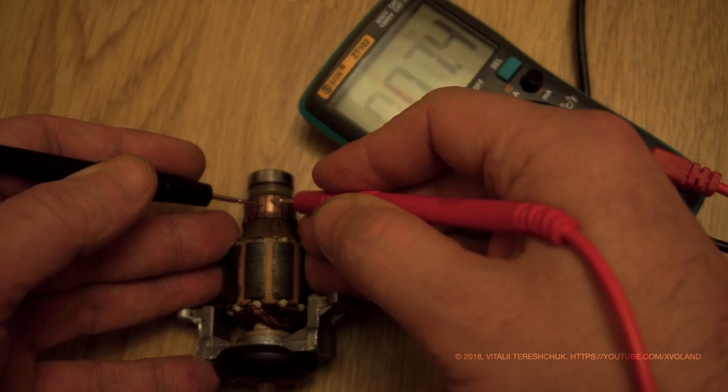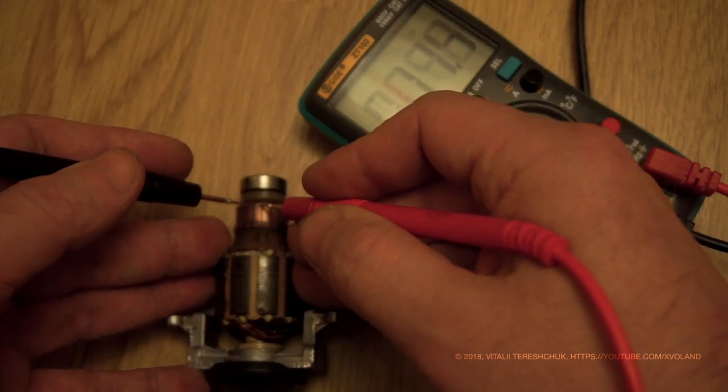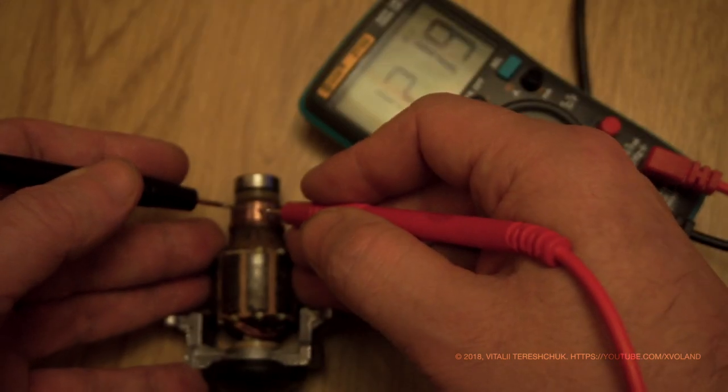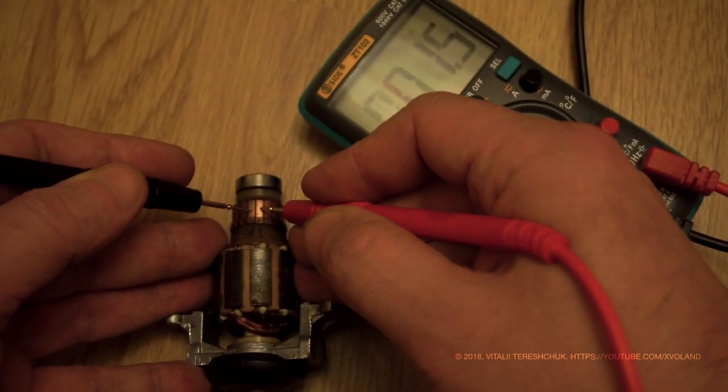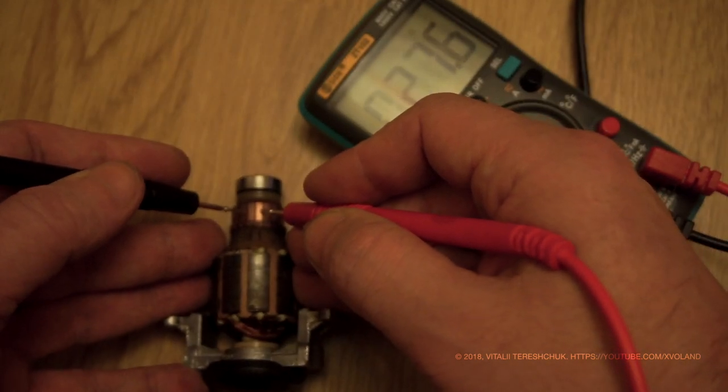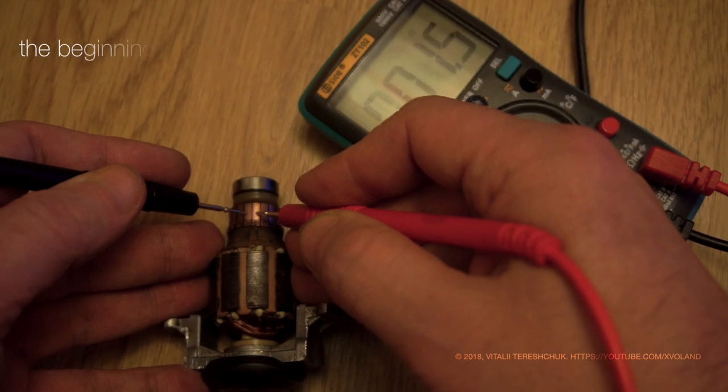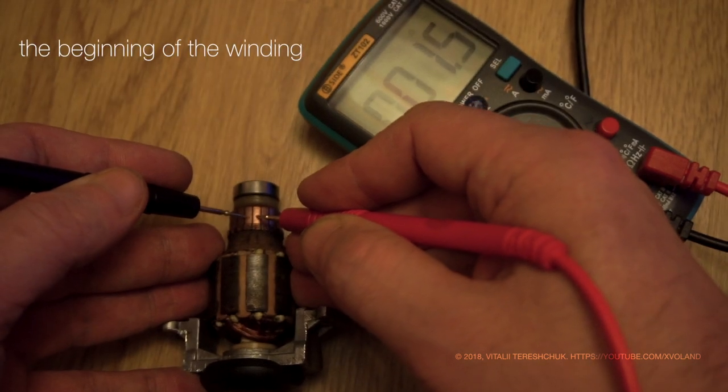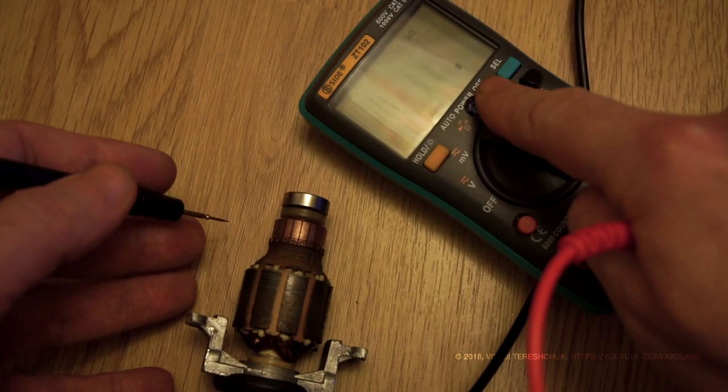But sometimes resistance is much less, 2 or 3, maybe 4 ohms. This is approximately equal to half the first value. That means you've found the beginning of the winding.